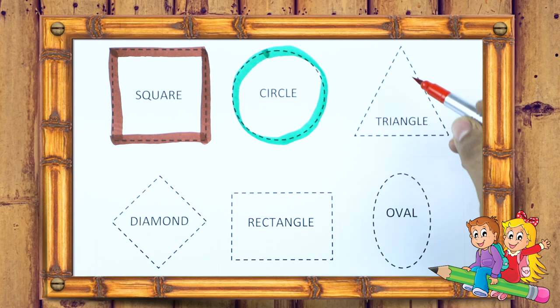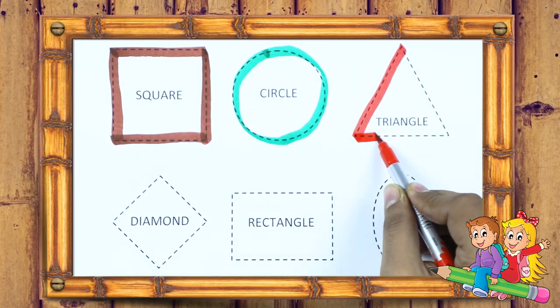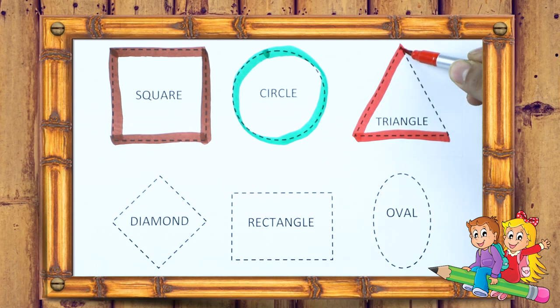Triangle. We make triangle shape with red color. It's a triangle.